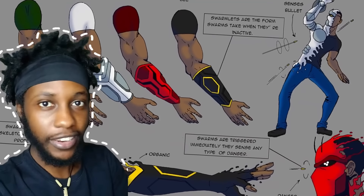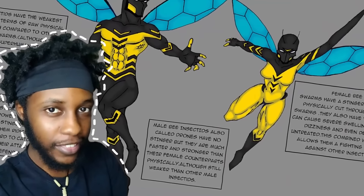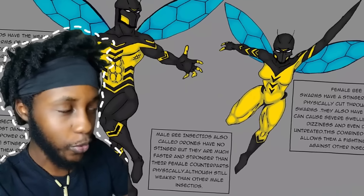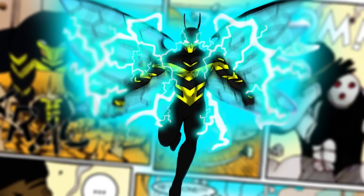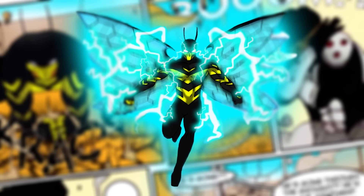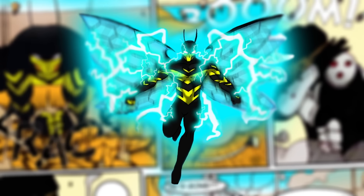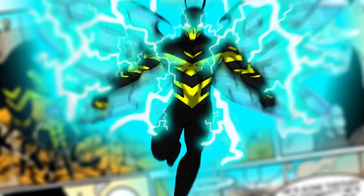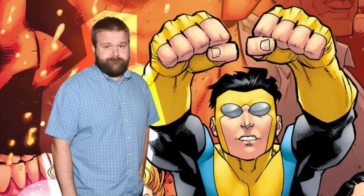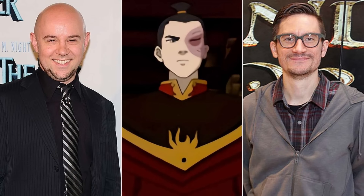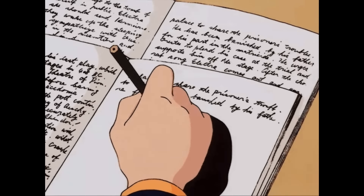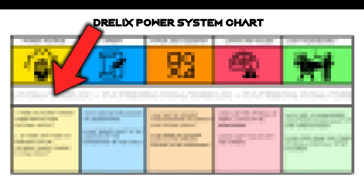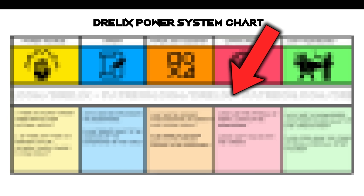I know that sounds weird but it's gonna make sense very soon. It comes from a species I created called the insective — half human, half insect. On top of explaining my character's powers and going through some concept art, I'm gonna show you what it takes to actually create your own power system. Based on years of research studying the best creators in the world, I compiled all that research into one chart. I'll reveal it fully at the end, but let's start with the first part.